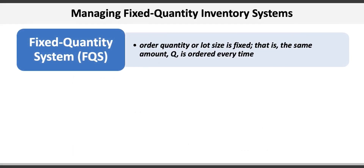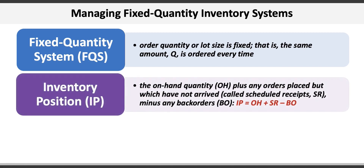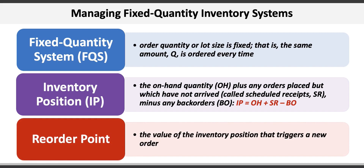There are three general types of inventory systems. The first is a fixed quantity inventory system, or FQS, where the order quantity or lot size is fixed — the same amount Q is ordered every time. For example, a window manufacturer might order a fixed quantity of 500 panes every time an order is placed. In this system, the inventory position at any time is the on-hand quantity (OH) plus scheduled receipts (SR) less any back orders (BO): IP = OH + SR − BO.